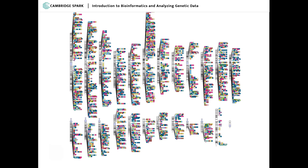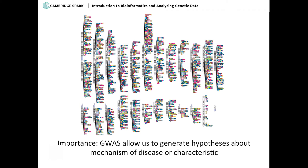This is a plot of all the genome-wide association studies that have been done — colored by the type of disorder they represent, so some are metabolic, some are anthropometric traits like height and weight, some are cardiovascular. Across all 23 chromosomes, we've discovered a ton of things associated with phenotypes. The most important thing is it allows us to generate really specific hypotheses about diseases that then allow you to go deeper into the biology and figure out if there's a way to design a therapy or understand the mechanism better.